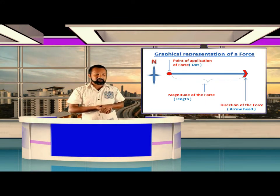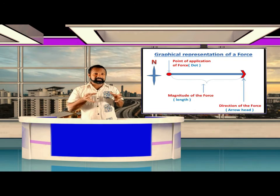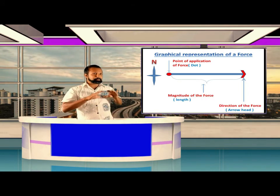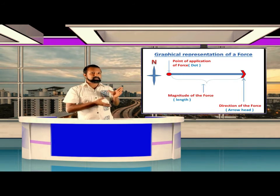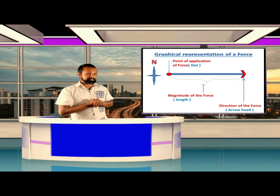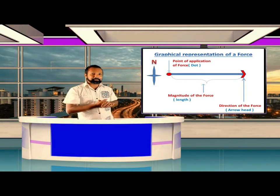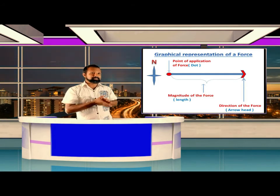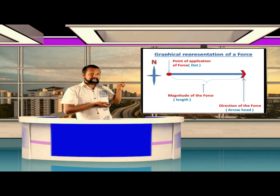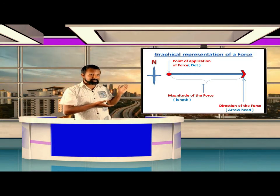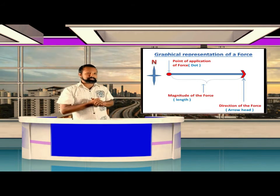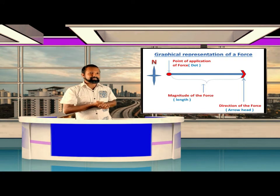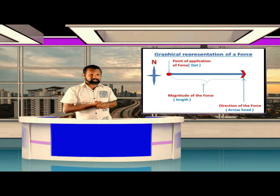We can represent force graphically using a line diagram. Three factors are considered: the length of the line represents the magnitude of the force; the dot at the beginning of the line segment represents the point of application of force; and the arrow heading at the end of the line segment represents the direction of force.